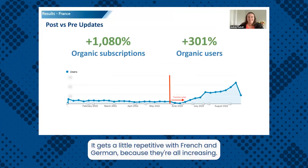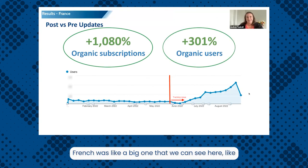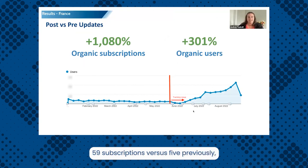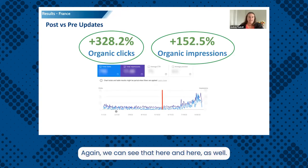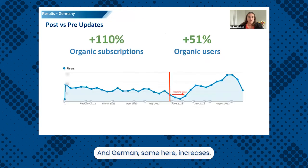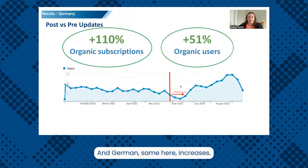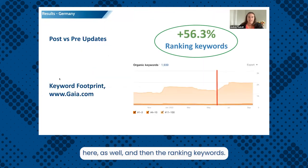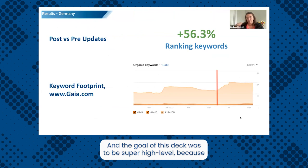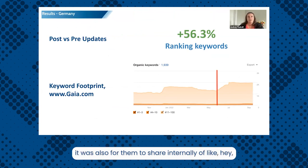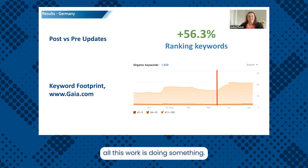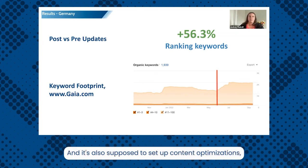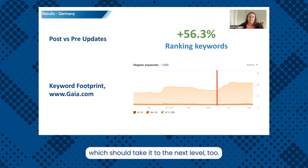French and German are similar — both increasing. French was a big one: 59 subscriptions versus five previously, and over a thousand users versus around 300. German similarly saw clear increases, going way up versus where it was before the updates. The ranking keywords also improved. The goal of this deck was to be super high level, because it was also for them to share internally — showing that all this work is doing something — and it's also meant to set up content optimizations, which should take things to the next level.